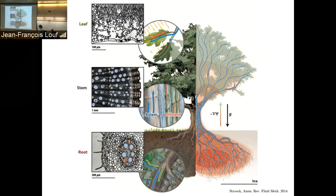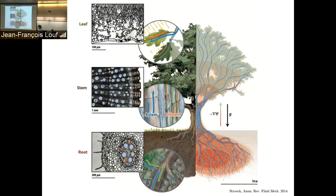Before we start, I want us to have the same language and definitions. Water transport in plants works as follows: water in the soil is absorbed through the roots, flows through channels called xylem — which are dead cells, essentially just pipes — all the way up to the leaves where evaporation occurs. The pressure inside xylem is negative, down to minus six bars. In very dry conditions, you can have cavitation events; the water there is metastable, meaning plants really live at the edge of death.